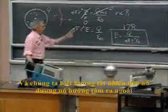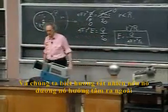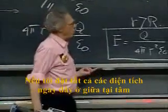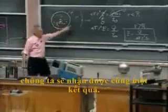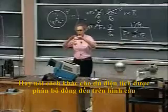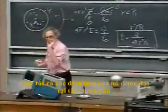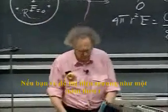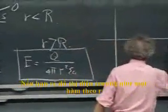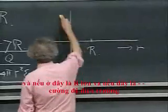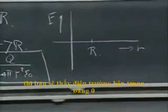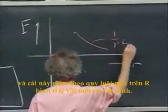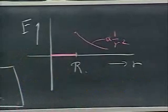We know the direction: if the charge is positive, the field is radially outwards; if negative, radially inwards. This is a non-trivial result. Whether the charge is uniformly distributed over a sphere or whether all of it is exactly at the center makes no difference for the E field, as long as you're outside the sphere. If you plot the electric field as a function of r, with capital R as the sphere radius, the electric field is zero inside, jumps to a maximum value at R, and then falls off proportional to one over r squared.